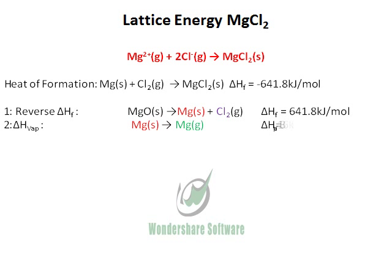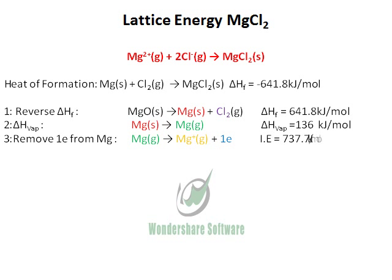Then we convert magnesium solid to magnesium gas. Now this magnesium gas has to be converted into its ionic form, meaning we remove one electron at a time from magnesium — that's the ionization energy. After getting Mg⁺, we remove one more electron to get Mg²⁺, which gives the second ionization energy.